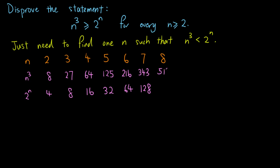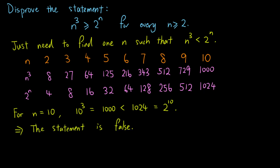8³ is 512, 2⁸ is 256. 9³ is 729, 2⁹ is 512, almost there. 10³ is 1000, and 2¹⁰ is 1024. So finally, 1024 is greater than 1000, so 10³ is less than 2¹⁰. So we have a counter-example, n equals 10, and the statement is false.